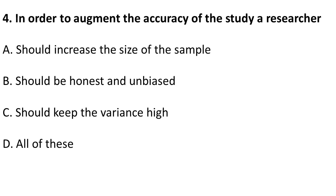The next question: in order to augment the accuracy of a study, a researcher should do what? Option A: increase the size of the sample — this is correct; the bigger the sample size, the greater the accuracy. Option B: should be honest and unbiased — yes, this is also a prerequisite for accuracy. Option C: should keep the variance low — this is also right. So the correct answer is all of these.